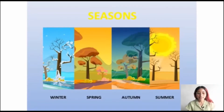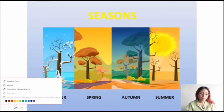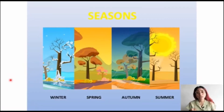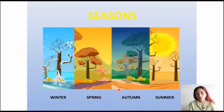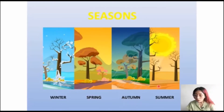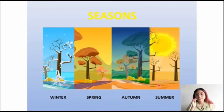We have four seasons. We have winter — repeat and say: winter. And then we have spring, spring. Autumn, or autumn, autumn. And summer, summer. Okay, so those are the four seasons of the year.